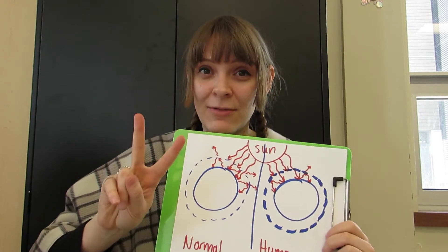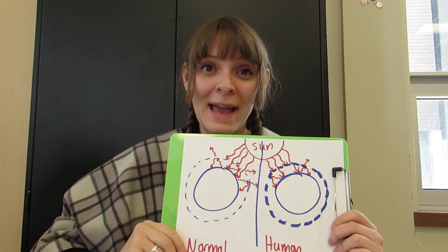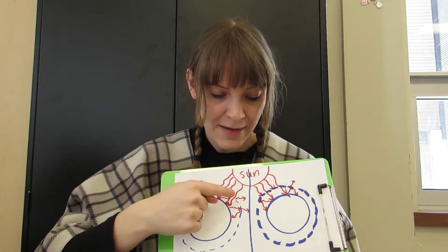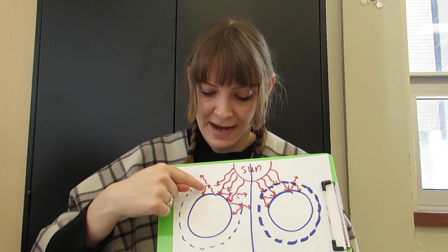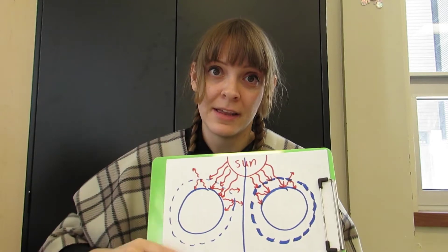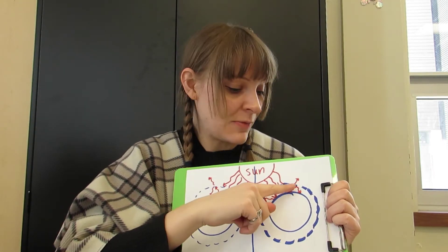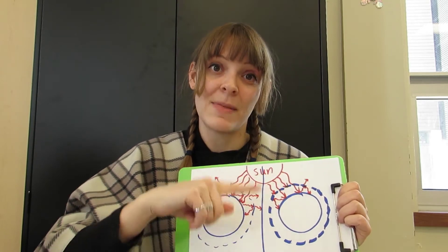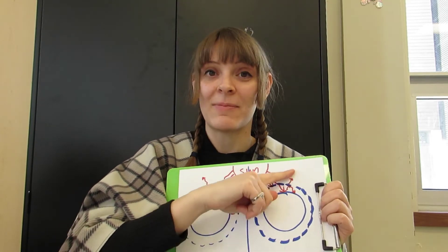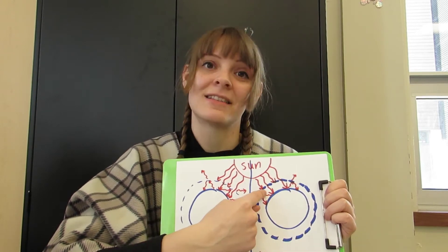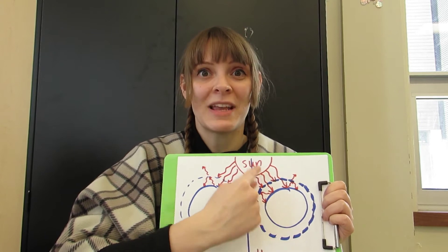The second thing to notice is the heat that's escaping. Here we have the normal heat escaping — I've indicated that with three arrows. But in the enhanced version there is only one arrow of heat escaping, meaning that less heat is escaping to space and more of it is being retained near the Earth's surface.